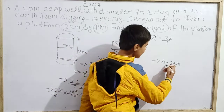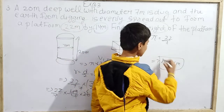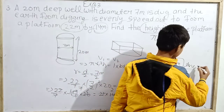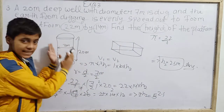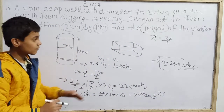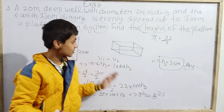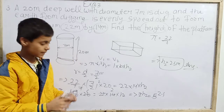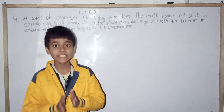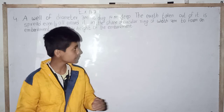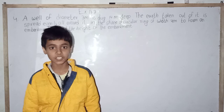So h2 is the correct answer here. Whatever platform is made from the earth dug out of the well will be 2.5 meters in height. We have solved this question. I am really very sorry — the light went out, so I will give question 4 in the next video. Thank you for watching.